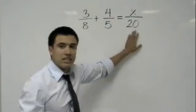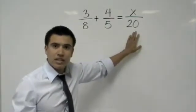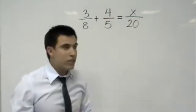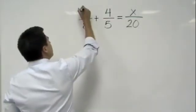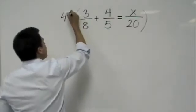8, 5, and 20. Well, we want to find the lowest common denominator for all of these three numbers. And, if you know that, you would know that it's 40.